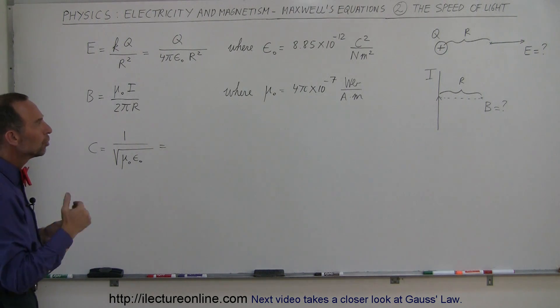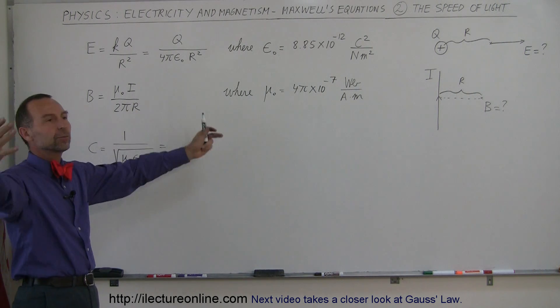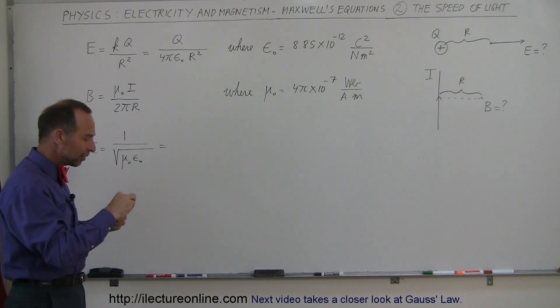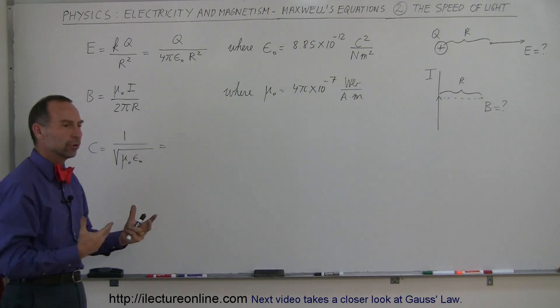So what is mu sub nought and epsilon sub nought? Well, those are properties of free space out there in the universe. The whole universe is filled with space, and it controls how fast magnetic fields and electric fields can interact with each other and can interact with charges and currents. There's a finite speed at which things can move through space and interact with each other.